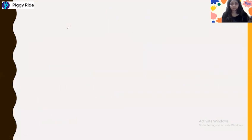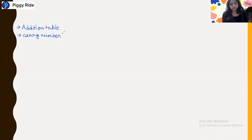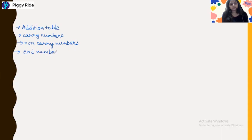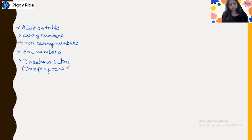We have discussed the addition table, carry numbers, non-carry numbers, and the 'and numbers.' We also discussed the sutra called the Dasham sutra, which in English is called the dropping tens method, or we can also say the line addition method.